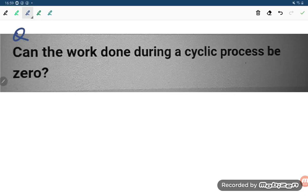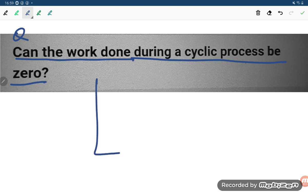Hello students, let us see one problem. Can the work done during a cyclic process be zero? Can the work done during a cyclic process be zero? What they are saying is if it is A and this is B...